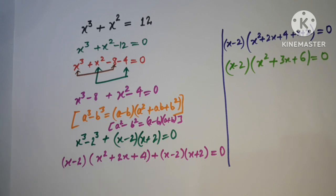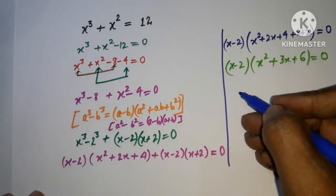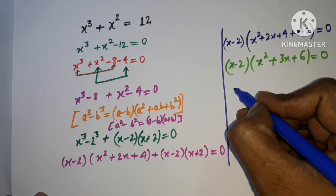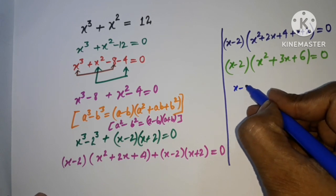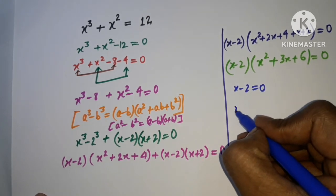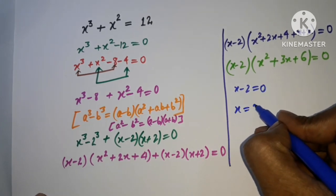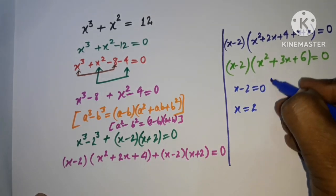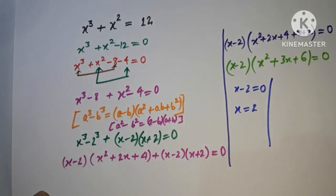Either factor can be zero. From the first factor, x - 2 = 0, so x = 2.